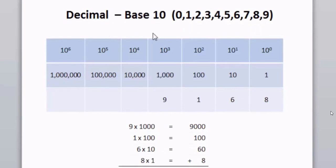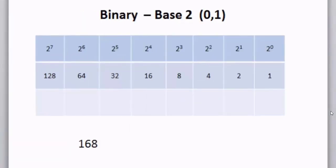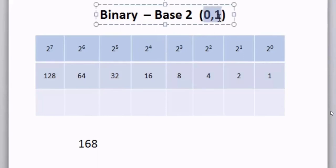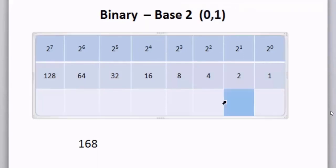This is the base 10 decimal number system. If we consider binary and look at it in the same light as decimal, binary is a base 2 number system. There are only two characters, or two numbers: 0 and 1. So under the place values, we can only have 0s or 1s.